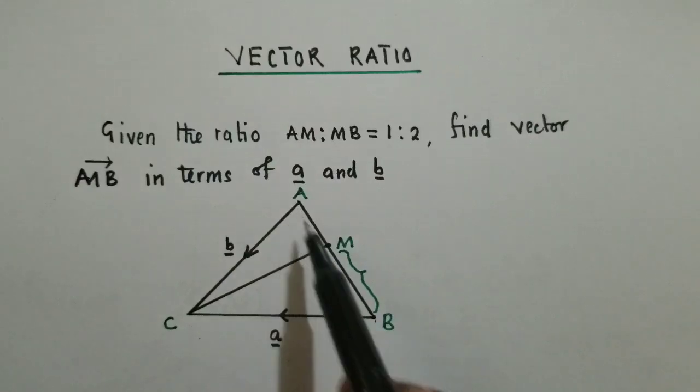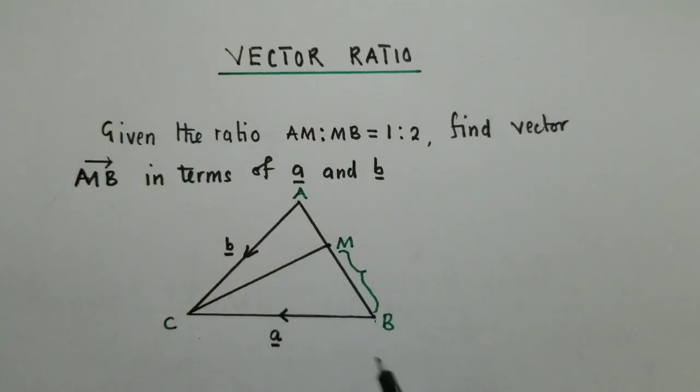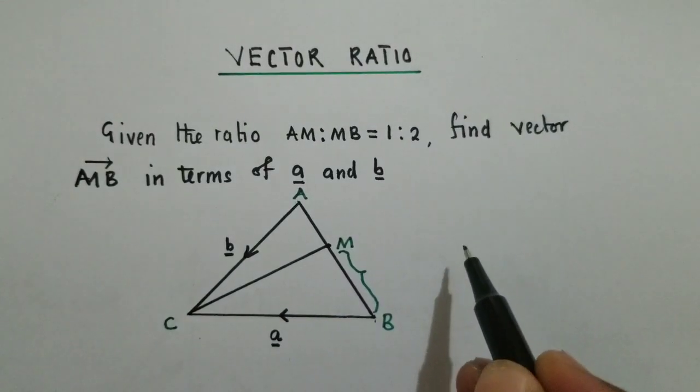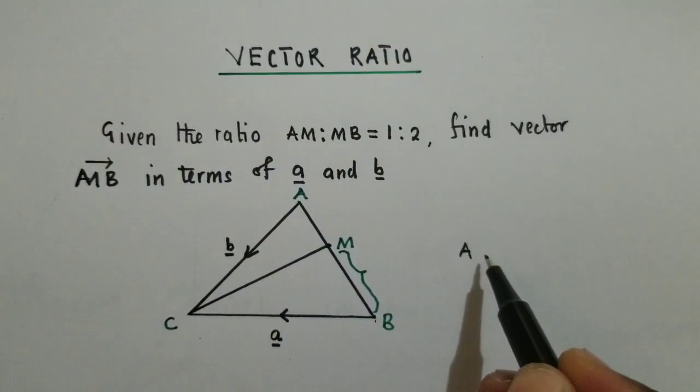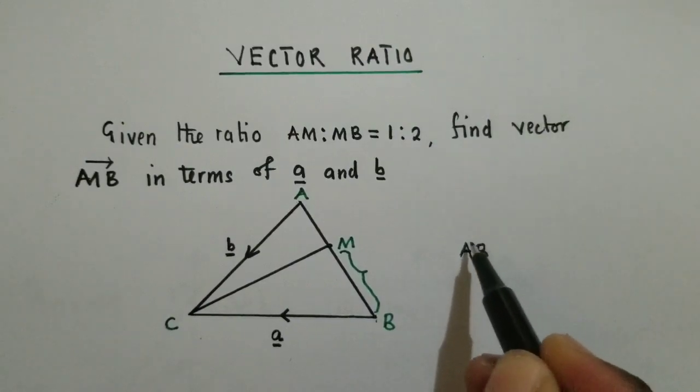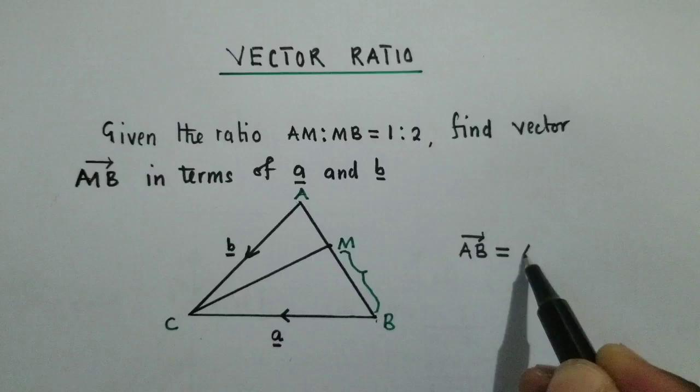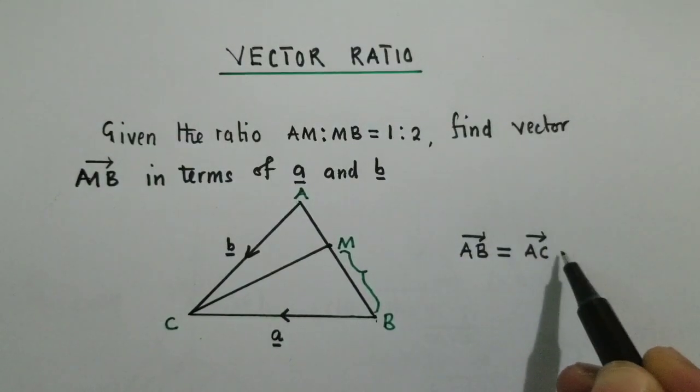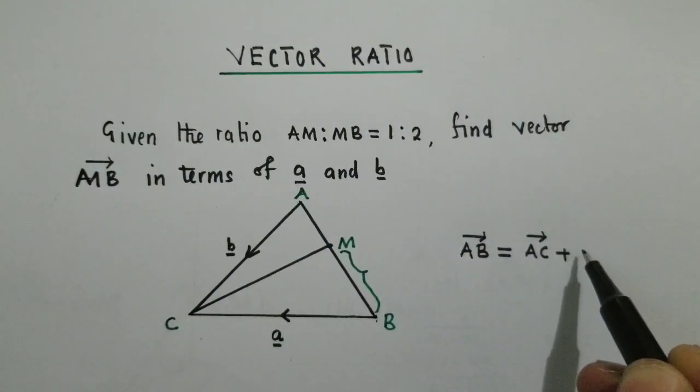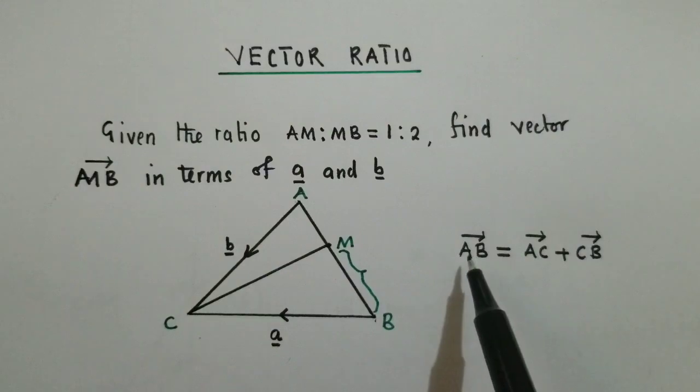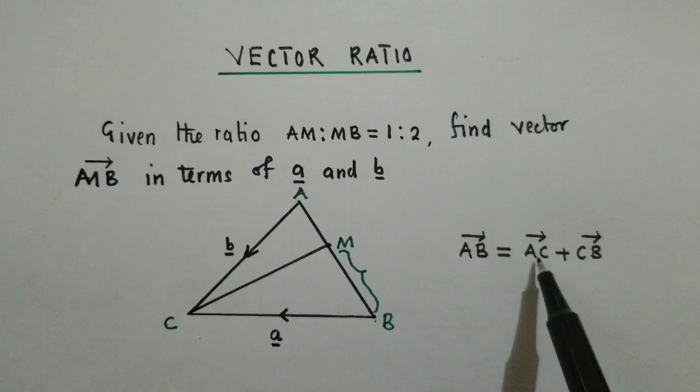We first need to find AB as usual. So vector AB equals AC, that's vector AC plus vector CB. So you always start with the letter that is starting. We're starting with A, so here we must also start with A.